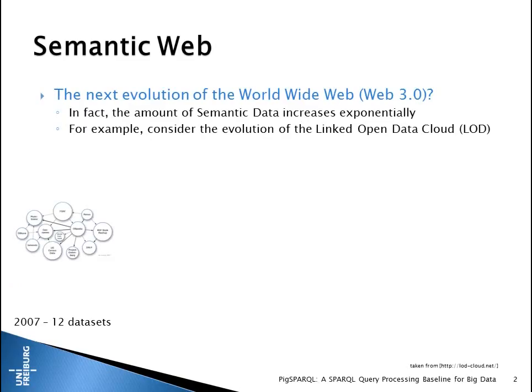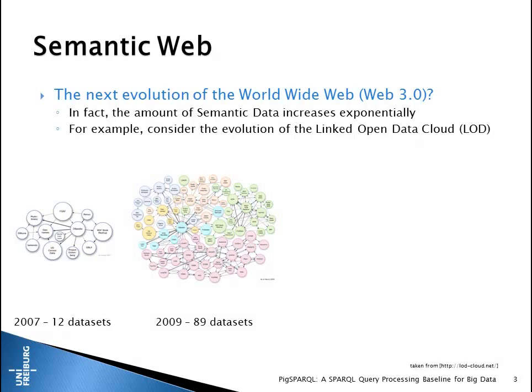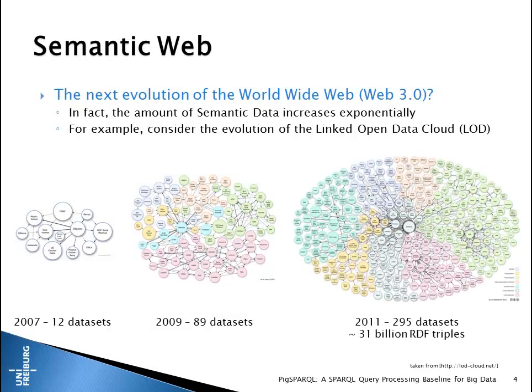There is an open discussion whether the semantic web will be the next evolution of the worldwide web or not. What we observed in recent years is a rapid increase of available semantic data. An example is the Linking Open Data cloud, growing from 12 datasets in 2007 over 89 datasets in 2009 to nearly 300 datasets in 2011.